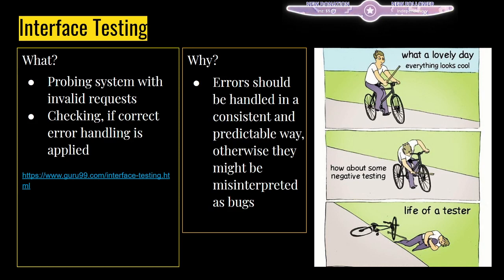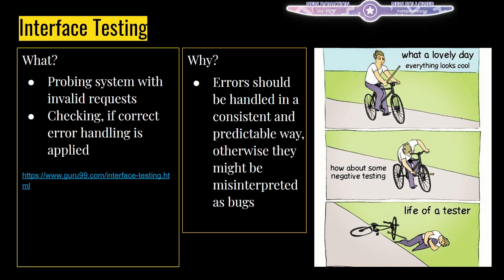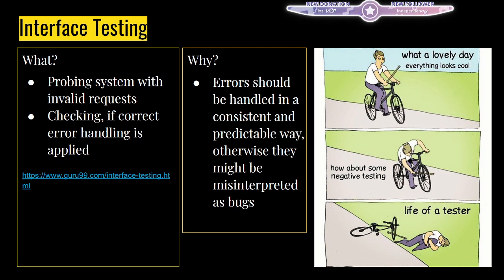Interface testing is basically testing for errors - what happens to software when you make it fail? What happens if you send a wrong request? What error message comes back, and is it able to handle errors in a consistent way? Those are the things interface testing tries to cover. The tester would deliberately try to break the system and get hurt in the process - that's the way to test it.